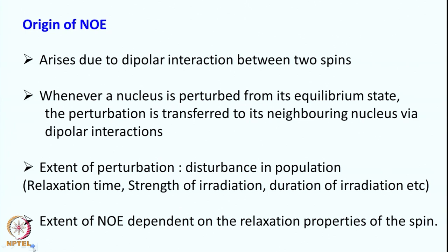Next we want to understand what is the origin of this NOE. NOE arises because of dipolar interaction between two spins. Each spin is a dipole, and between these dipoles there is an interaction. Dipolar interaction is distance-dependent, which is why the NOE effect can be seen up to about 5 Ångströms. NOE also depends upon angular aspects — how spins are oriented with respect to each other. So this gives lots of information about the orientation of spins, the distance between spins, and related properties.